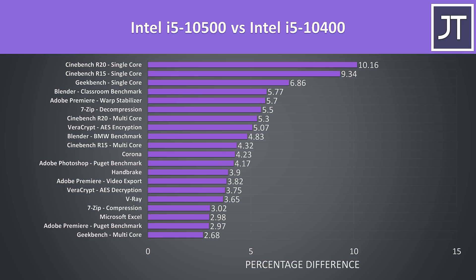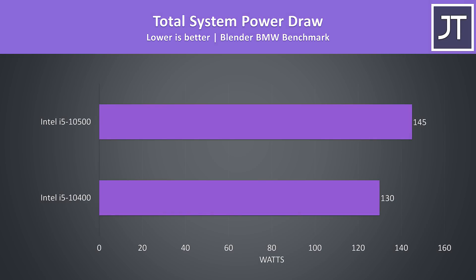What I found interesting is that all the single core workloads are at the top of the graph, indicating that the 10500 benefits more from these tests compared to multicore workloads. Looking at total system power draw from the wall with the Blender test running, the 10500 was using 15 more watts to complete the task less than 6% faster.